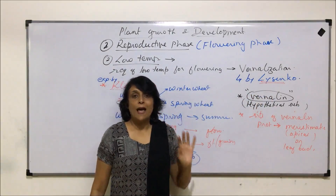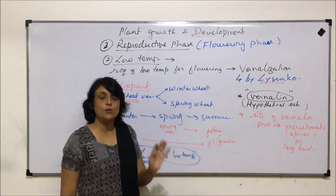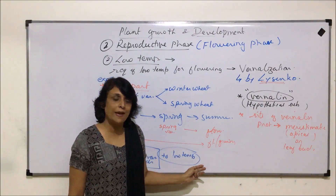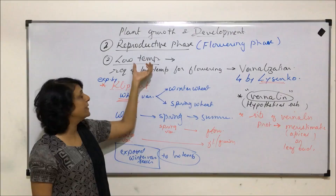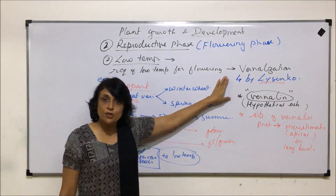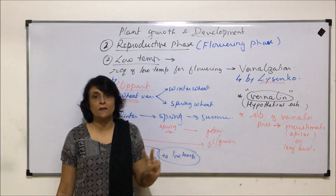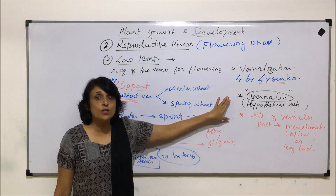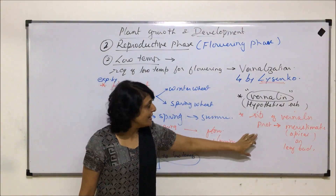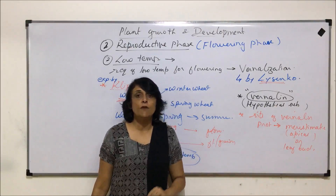For flowering to take place, there are two main conditions required by plants. First is the photoperiod — with three varieties: long day, short day, and day neutral plants. The second condition is low temperature treatment, known as vernalization. For both, there are hypothetical substances: for flowering it is florigen, whose site is the leaf; and for vernalization it is vernalin, whose site is the apical meristem, terminal bud, or leaf bud.